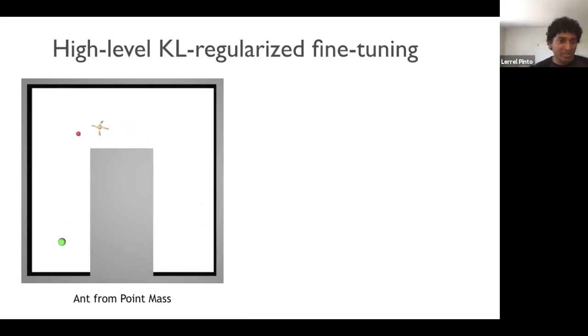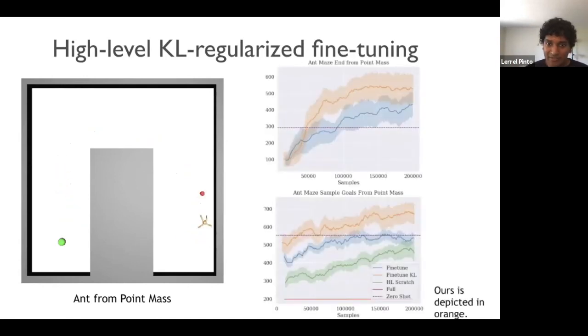And so now you can see this ant agent, and in this case, it should not clip the corner. And in terms of learning curves, in orange you can see our method. And in blue, you can see what happens if you do fine-tuning without the KL. And clearly, if you do it with the KL, it is much higher than without having the KL and regularized fine-tuning.